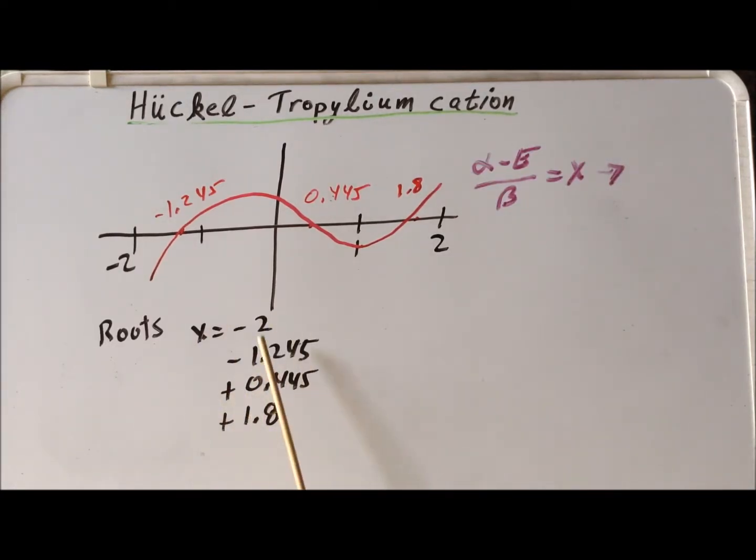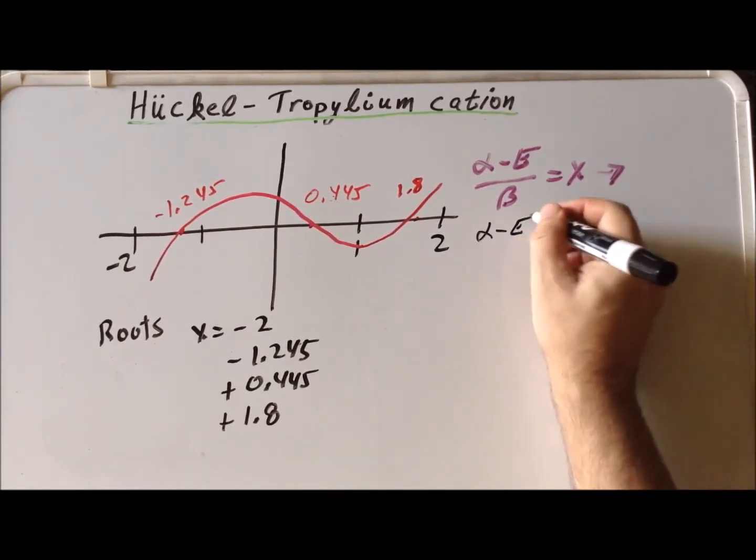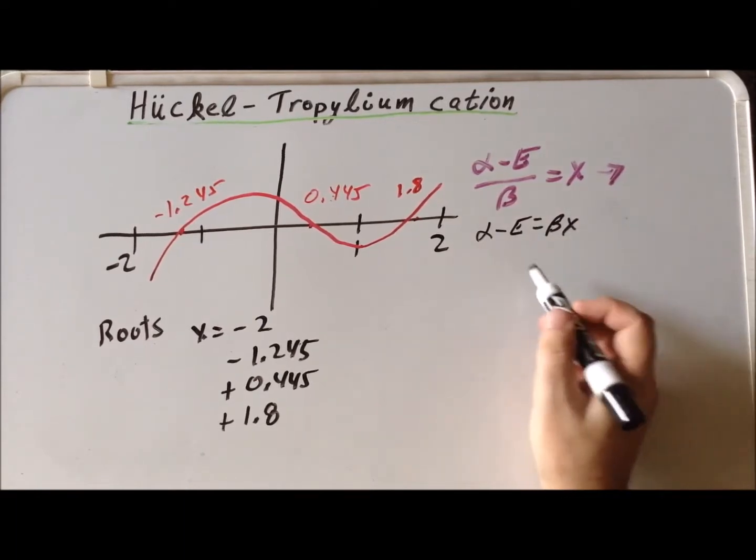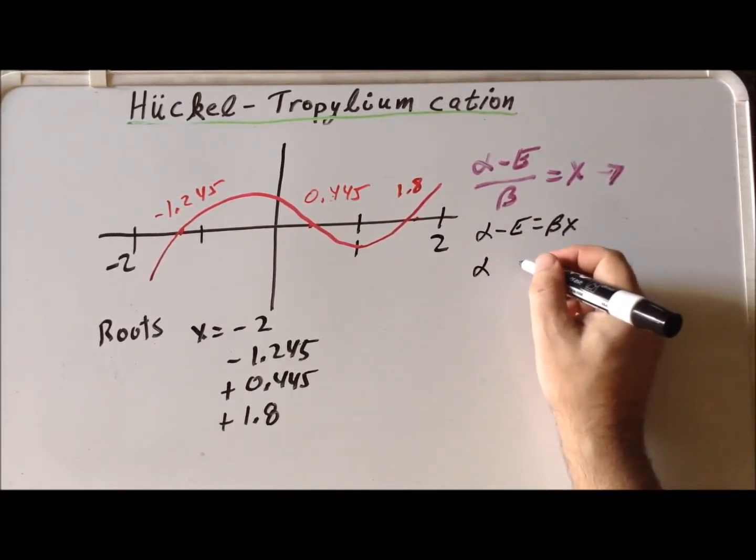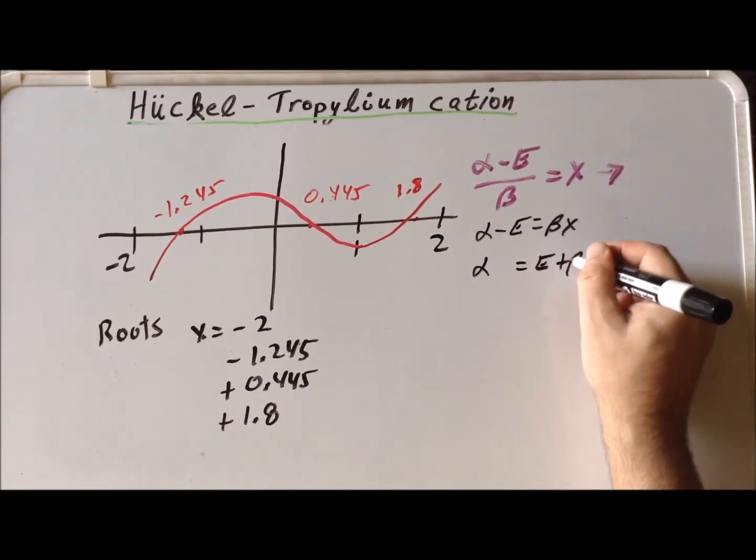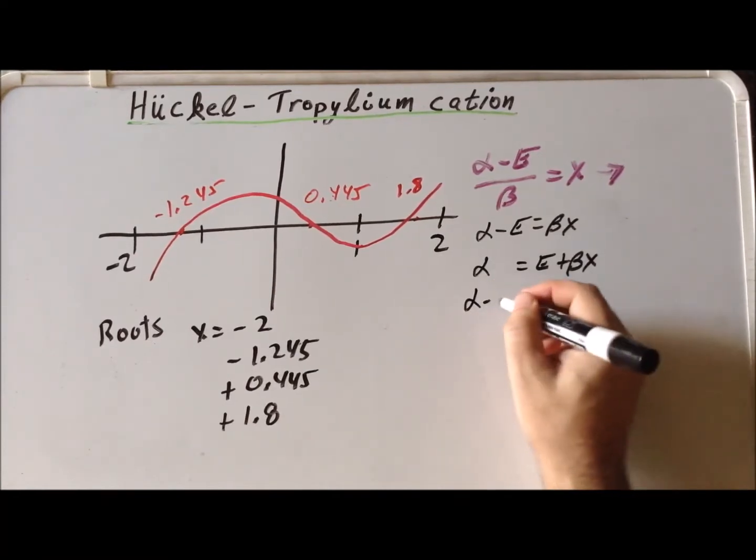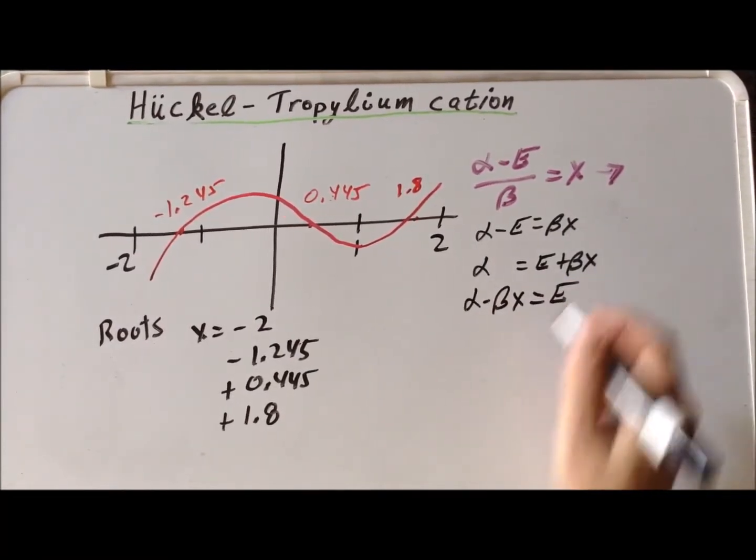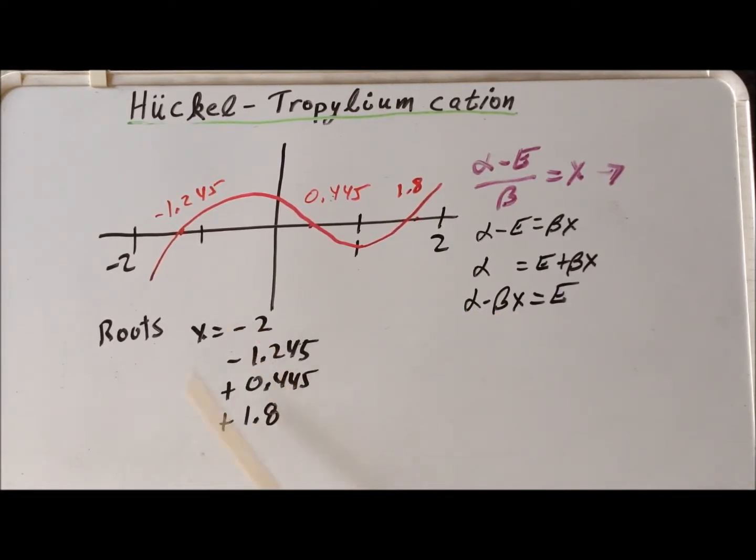Here we have a list of our roots, minus 2, which is non-degenerate. And then we have the three degenerate, doubly degenerate roots. We remind ourselves that we made a substitution that x was equal to alpha minus energy divided by beta. So with a little bit of algebraic manipulation here, multiplying both sides by beta, and then adding e to each side, and then subtracting beta x from each side, we realize that the energies are going to be equal to alpha minus beta times the particular root.